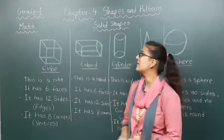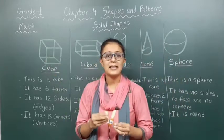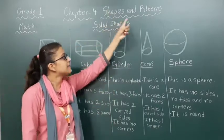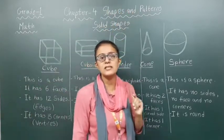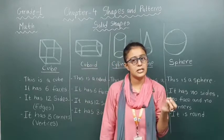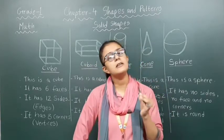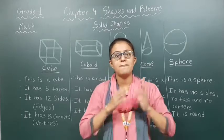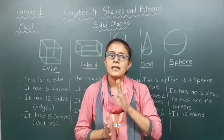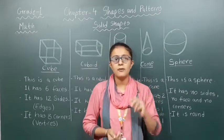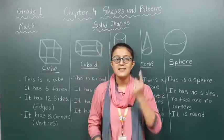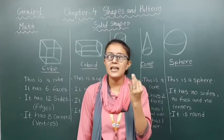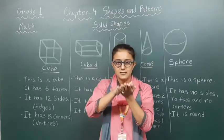Today we are going to learn about subject maths. We already started chapter number 4, that is Shapes and Patterns. In the previous video, we already learnt about shapes — shapes are divided into two categories: plane shapes and solid shapes. In the first video, we learnt about plane shapes. Which are the plane shapes? Square, rectangle, circle and triangle. These shapes are flat.